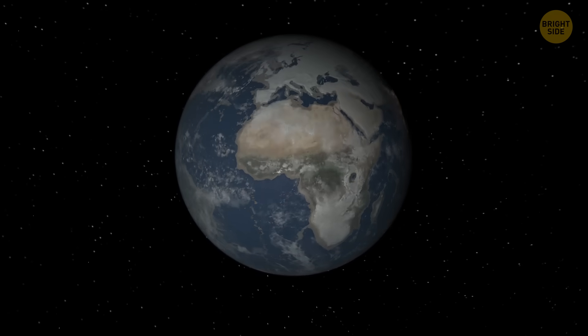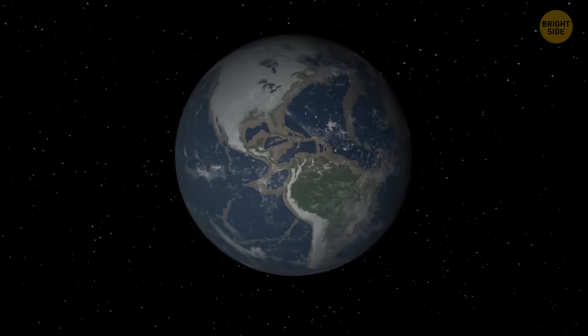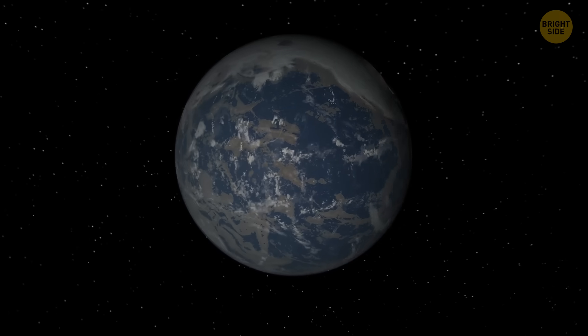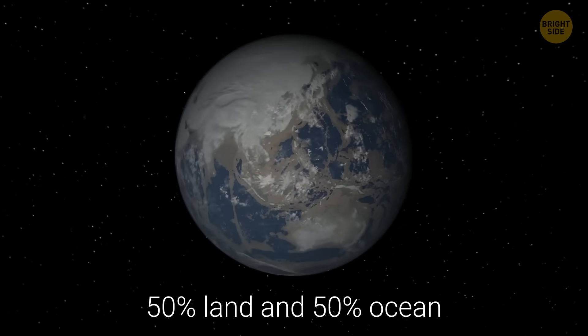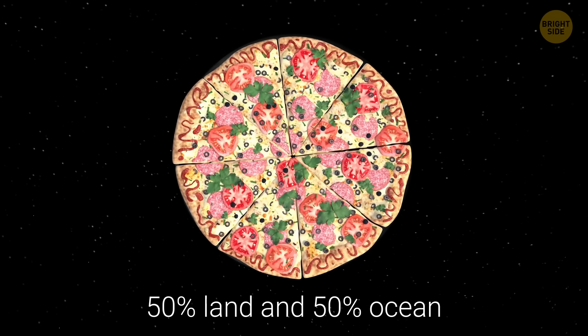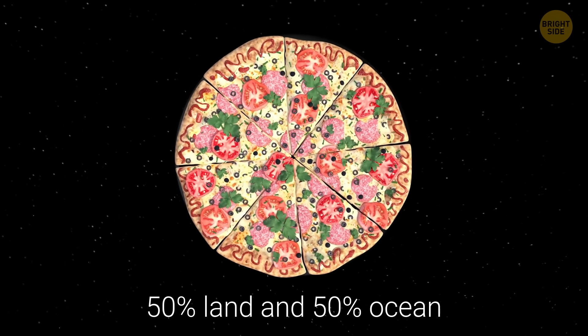Ever wondered what Earth would look like if it was split evenly between land and water? I mean, like 50% land and 50% ocean, like a cosmic pizza with just two toppings split equally.